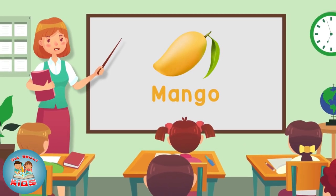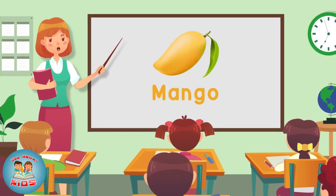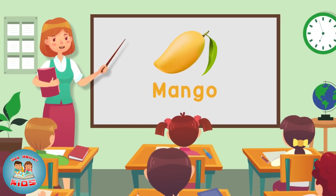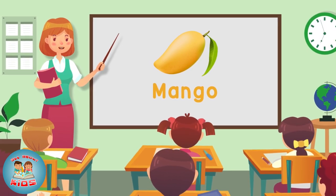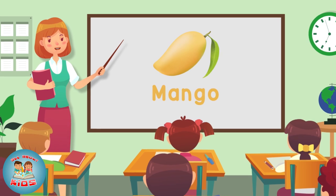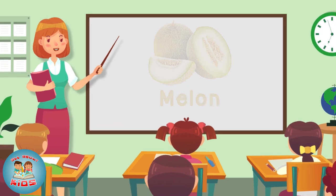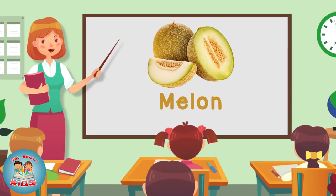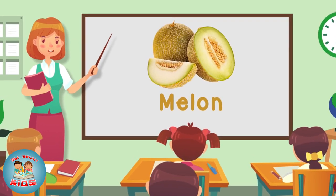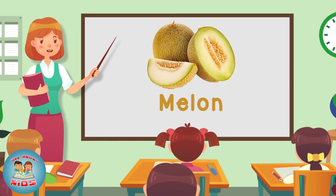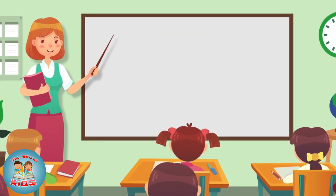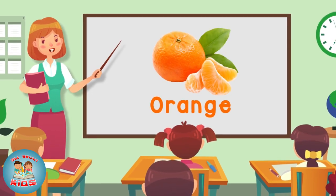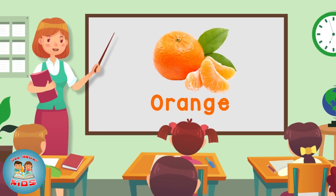Mango — this is a mango. Melon — this is a melon. Orange — this is an orange.